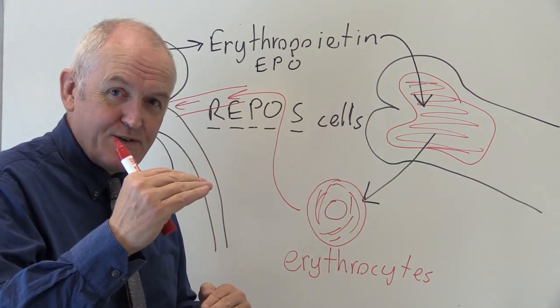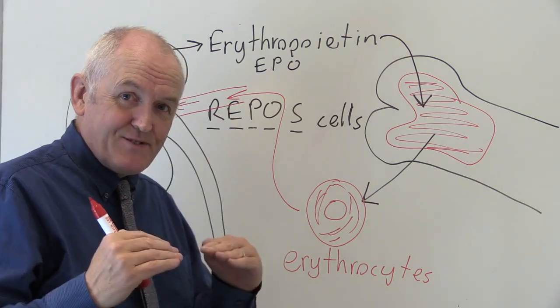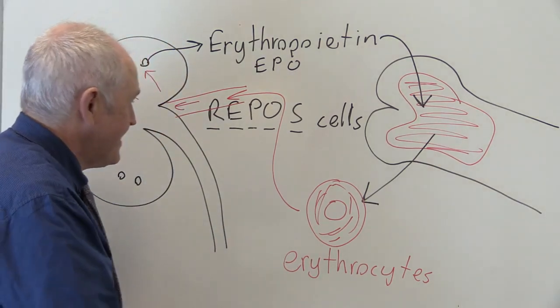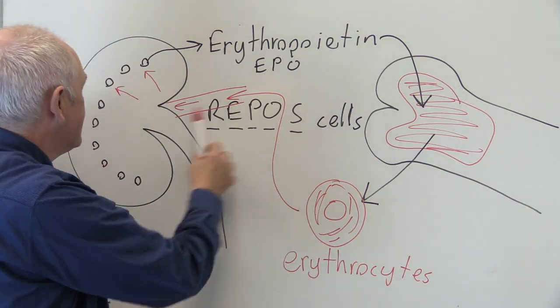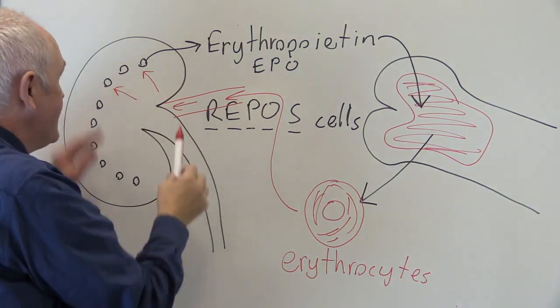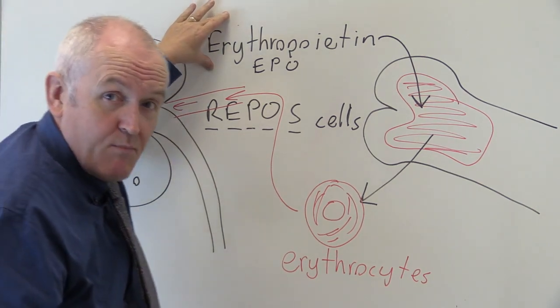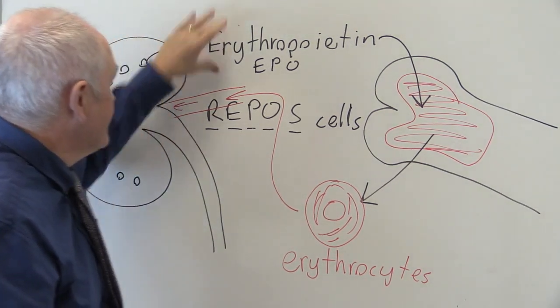We don't want the blood to be too thick, we don't want it to be too thin. We want the blood to carry the right amount of oxygen. So more red blood cells detected carrying more oxygen, that's detected there, and the whole process is controlled by producing more or less erythropoietin.